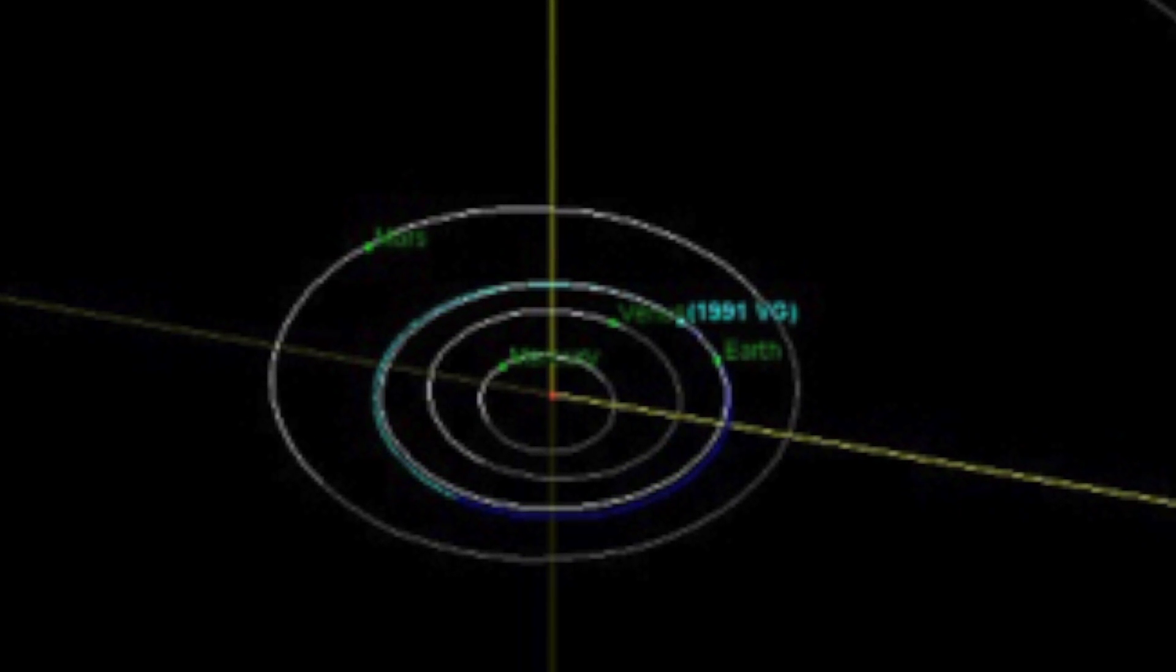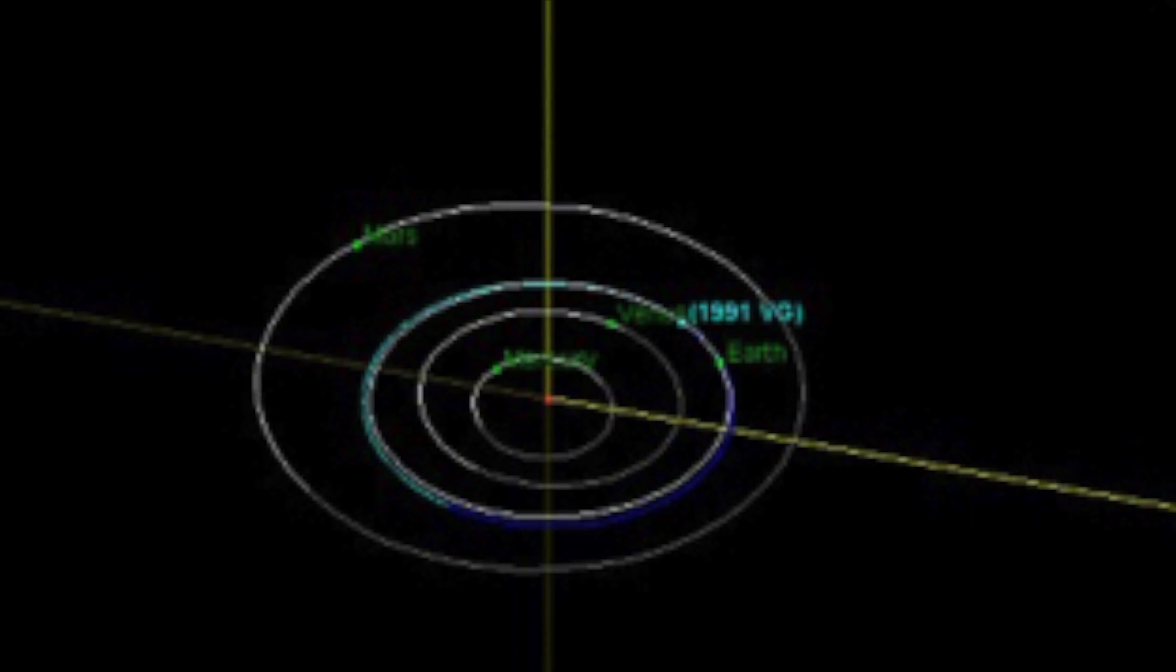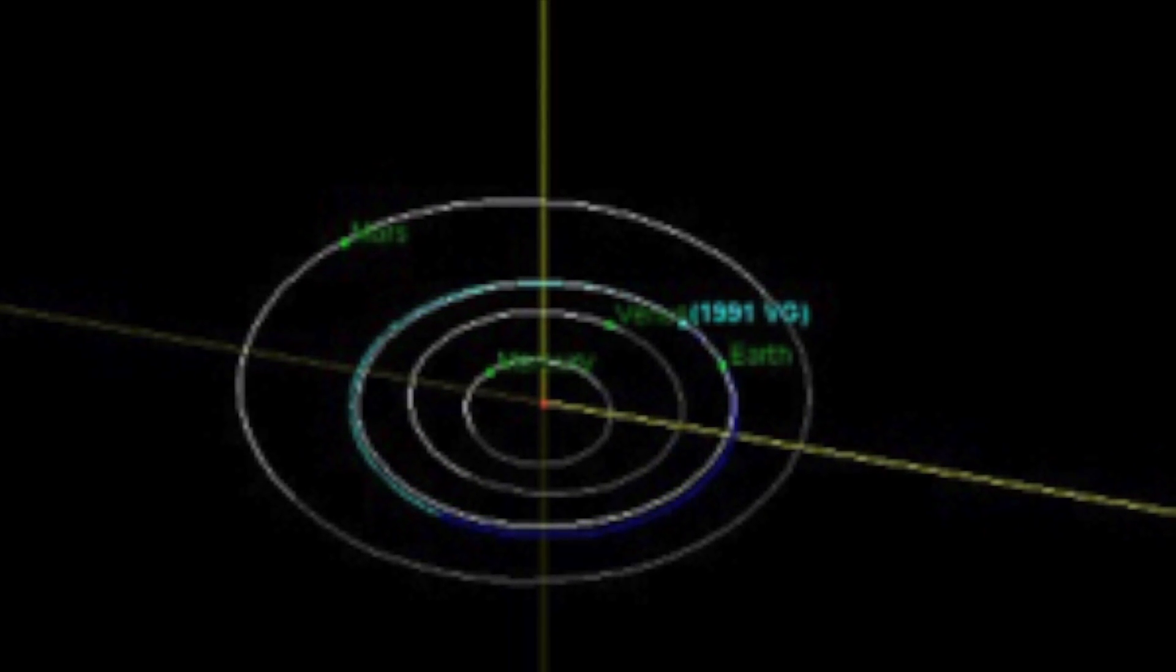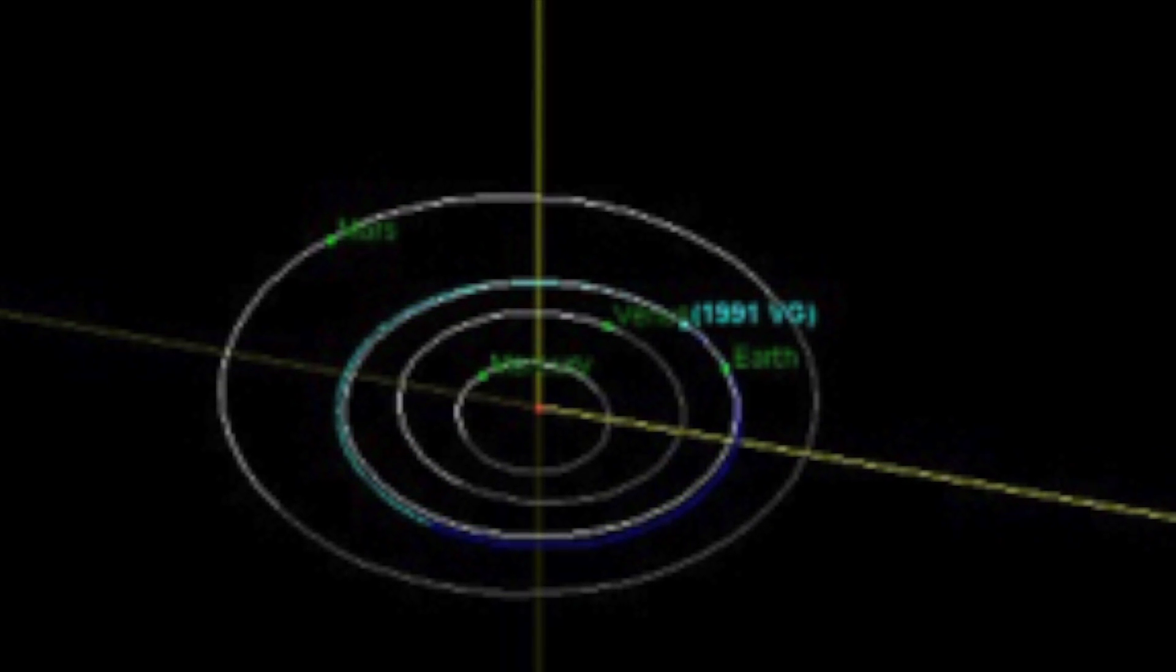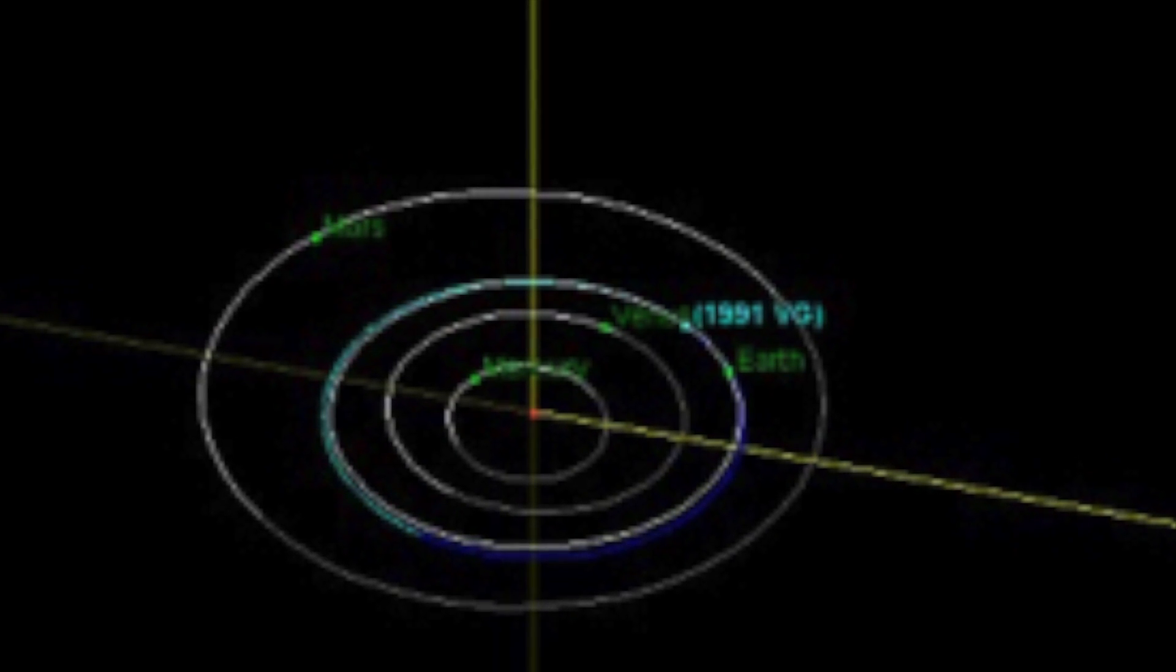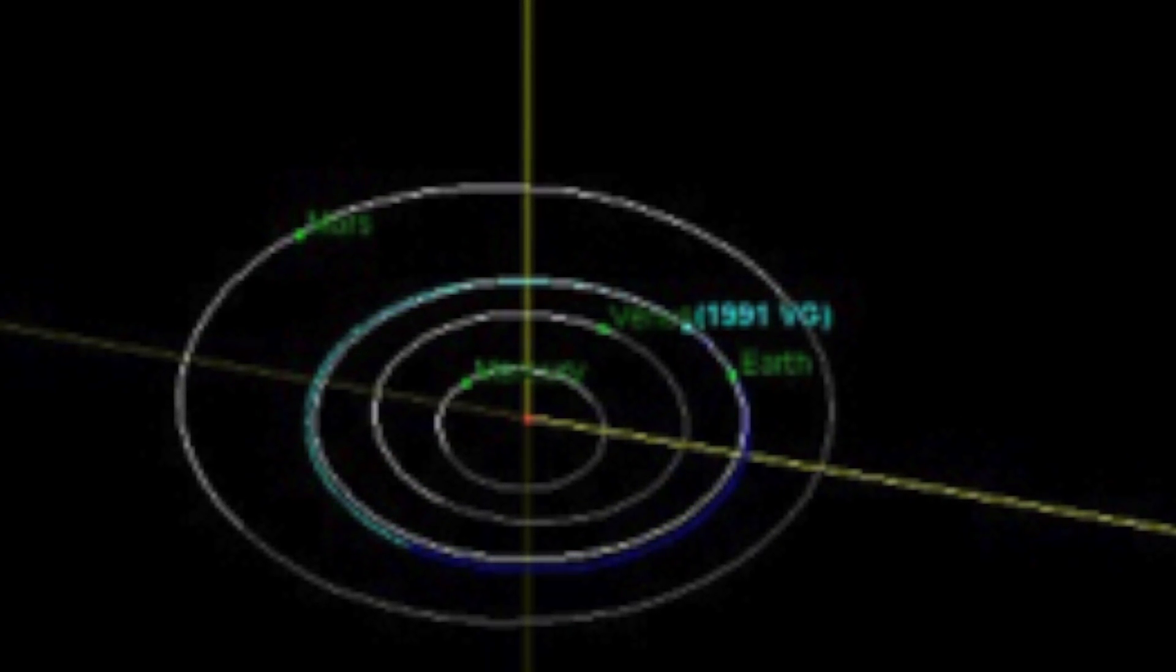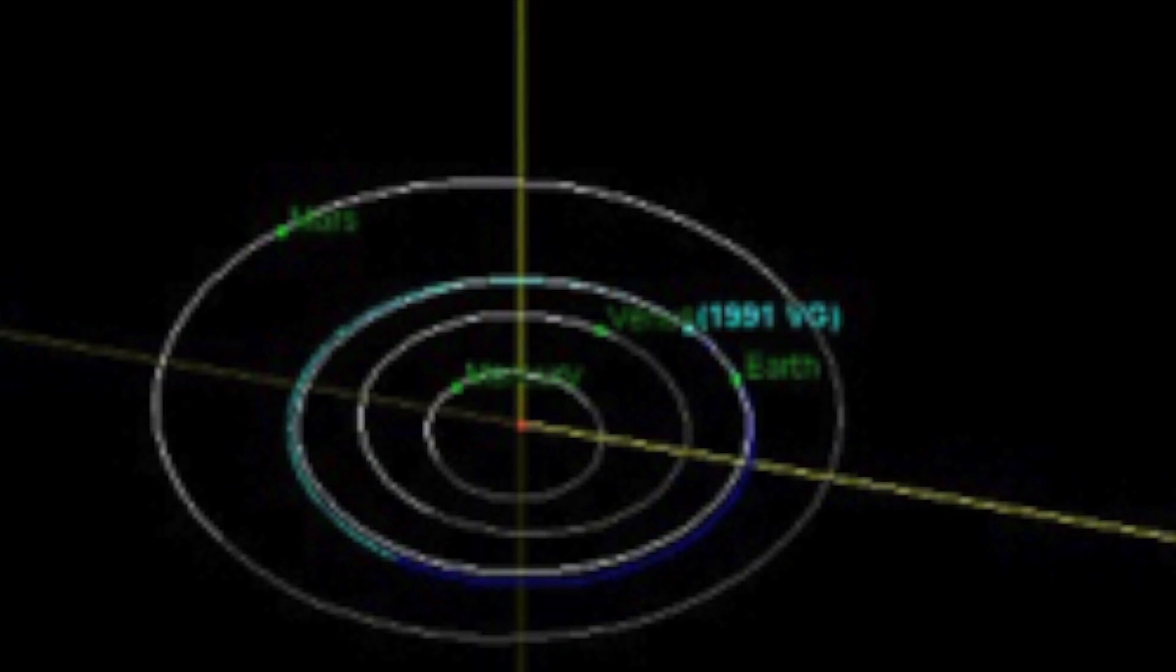Some experts suggest it may be a section of the Apollo 12 rocket, but Scottie claims the timings don't add up. "We looked into all the possibilities for it being man-made," Scottie told Motherboard. "There were a few possible spacecraft and rocket bodies that might be 1991 VG, but when we looked into each we were able to eliminate each of them."